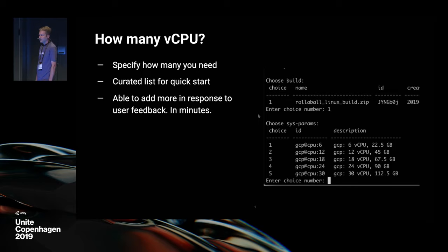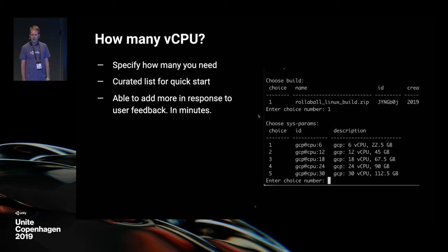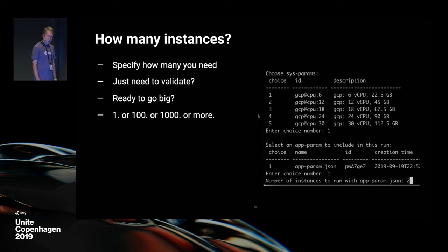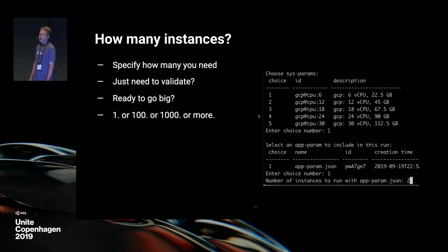To get started with Unity Simulation, you just need to answer two questions. First: how many CPUs do you need? We have a curated list of options that we believe will fulfill most use cases, but you know best what you need — we can respond to user feedback and quickly add new options. Second: how many instances of the simulation do you need? If you just need to validate your simulation is working, start with one. If you're ready to go big, try a hundred or a thousand — or more.